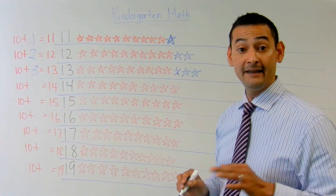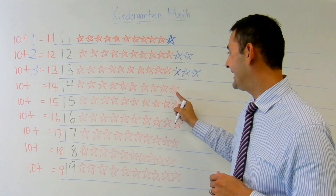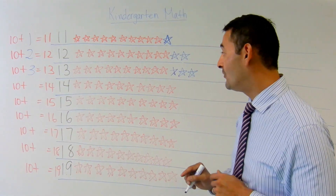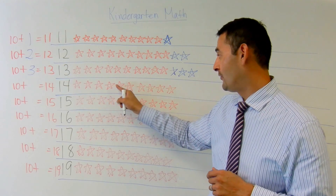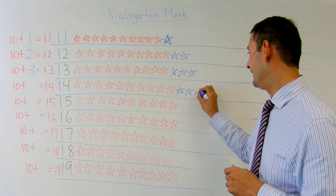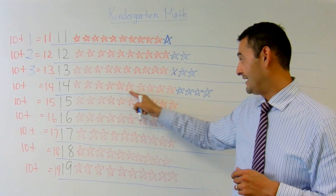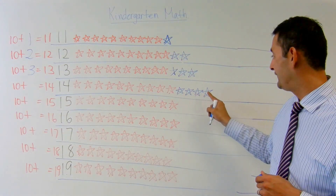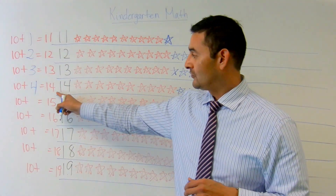Now let's take a look at 14. 1, 2, 3, 4, 5, 6, 7, 8, 9, 10. I've got 10 ones plus how many more is going to equal 14. Well, I've got 1, 2, 3, 4, 5, 6, 7, 8, 9, 10, 11, 12, 13, 14. I've got 10 ones plus 1, 2, 3, 4 — 4 more ones equals 14.